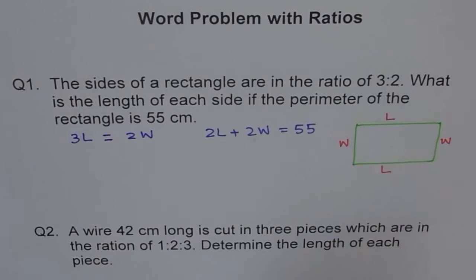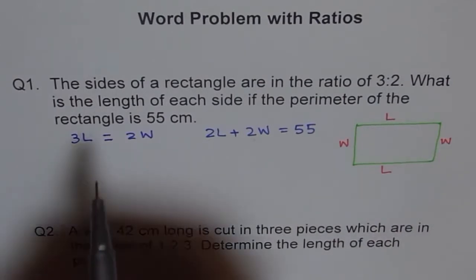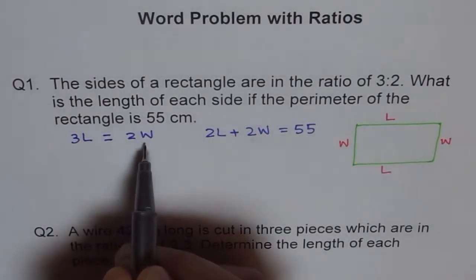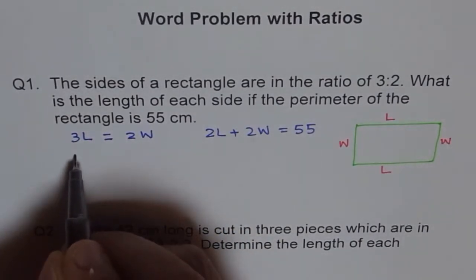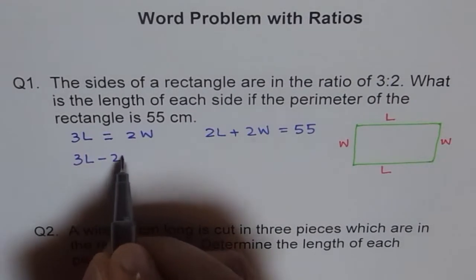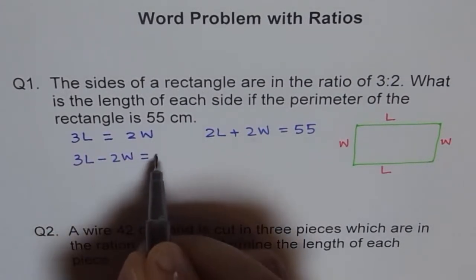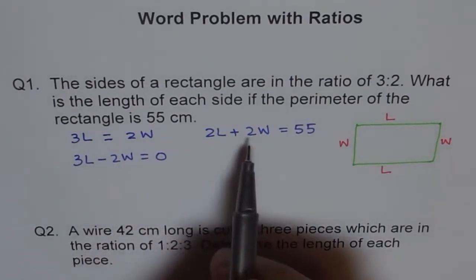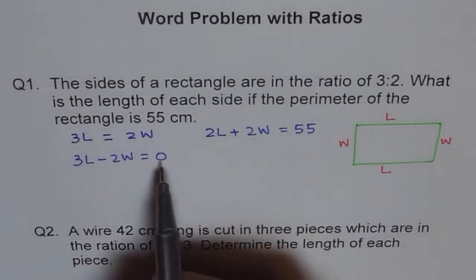Now we can rewrite this equation by bringing 2W on this side, so we say 3 times length minus 2 times W is equal to 0. Now you see these two equations can be solved simultaneously since there are two different equations. It forms a linear system.